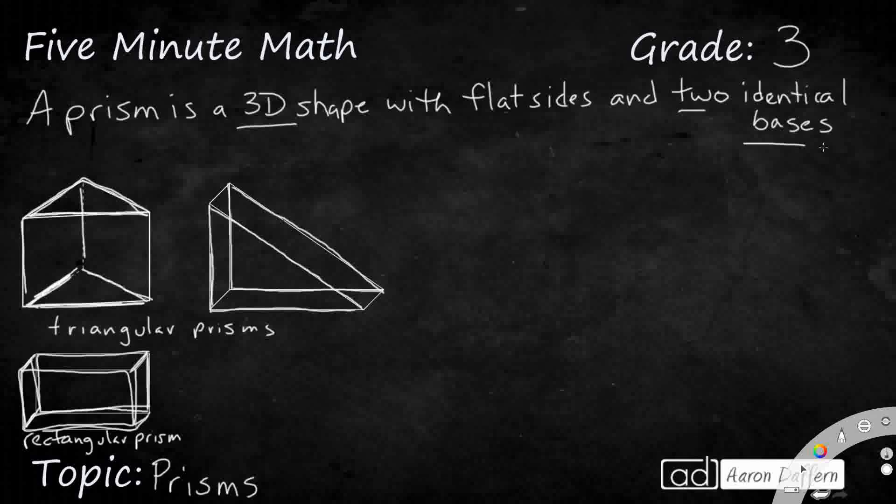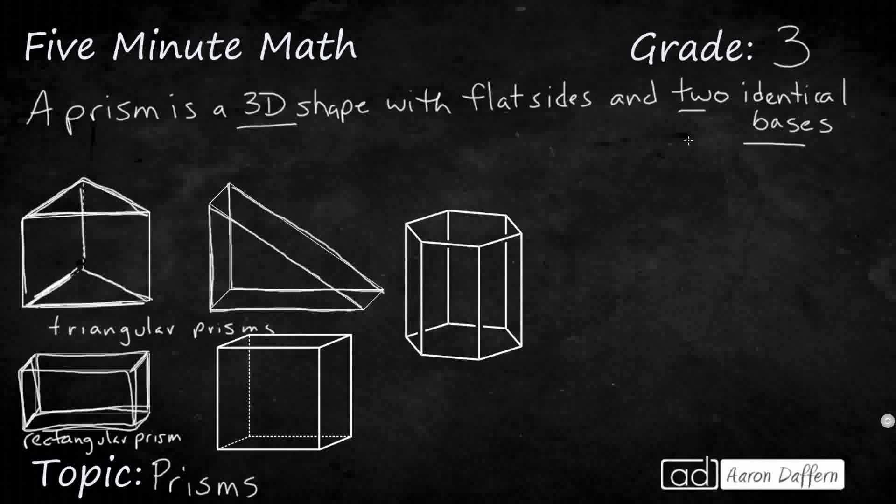But there's a few more prisms for us to look at. So this is actually a cube and it is a type of prism, even though it doesn't necessarily have the word prism in its title. Because does it have at least two identical bases? Yeah, actually all six faces of these are identical. They are all squares.